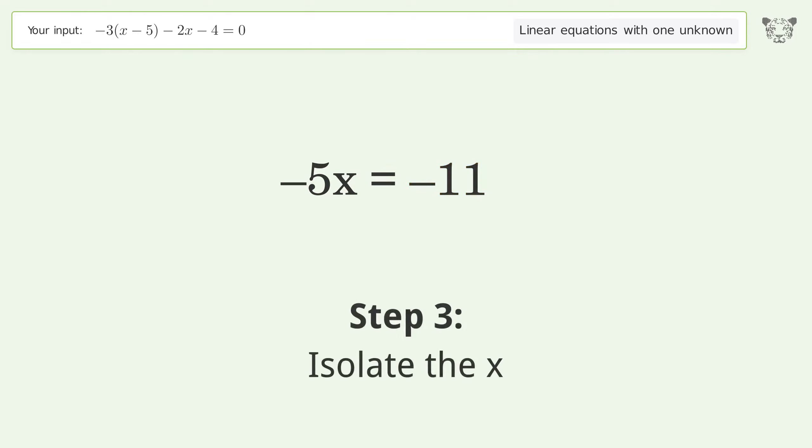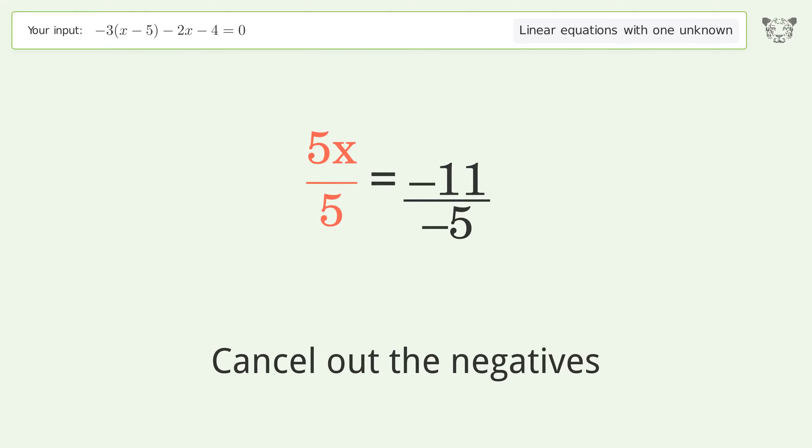Isolate the x. Divide both sides by negative 5. Cancel out the negatives. Simplify the fraction. Cancel out the negatives.